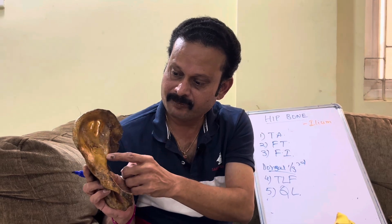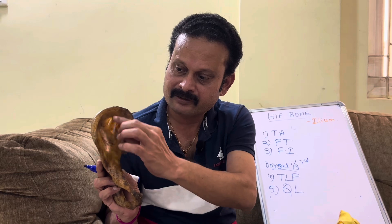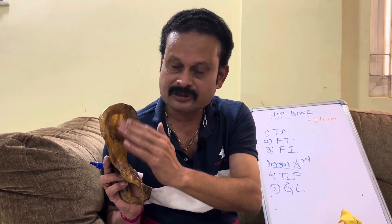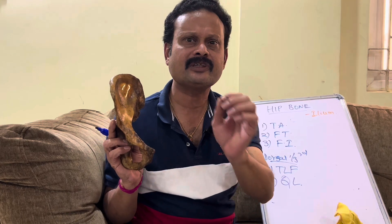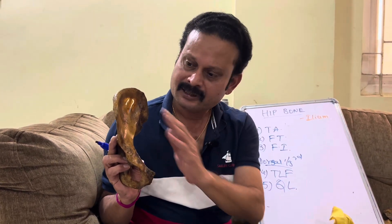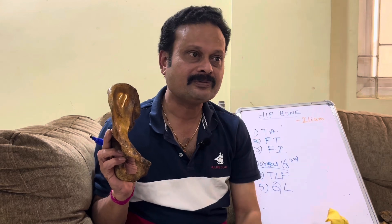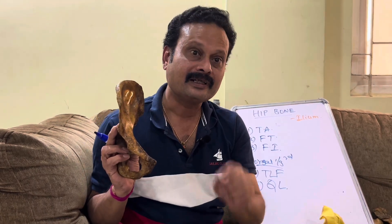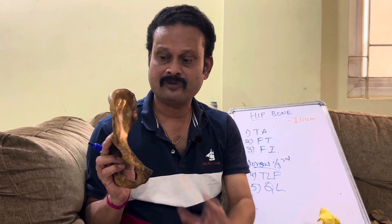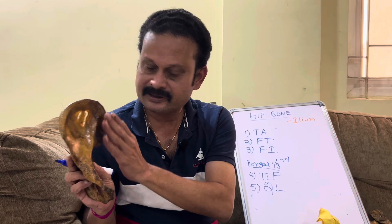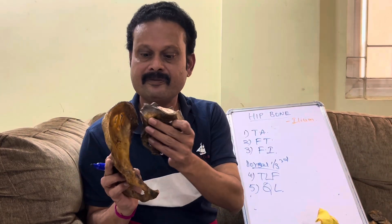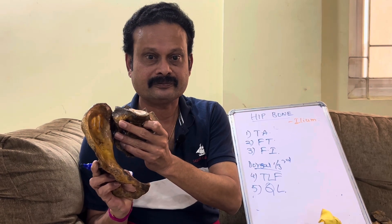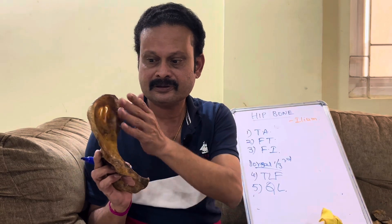Coming to the surfaces: the medial surface is divided by the medial border into the iliac fossa in front, which gives origin in its medial two-thirds to the iliacus muscle — analogous to subscapularis arising from the subscapular fossa — with insertion onto the lesser trochanter of the femur, forming a traction epiphysis. Behind is the sacropelvic surface, which articulates with the sacrum to form the sacroiliac joint, a synovial type of joint.